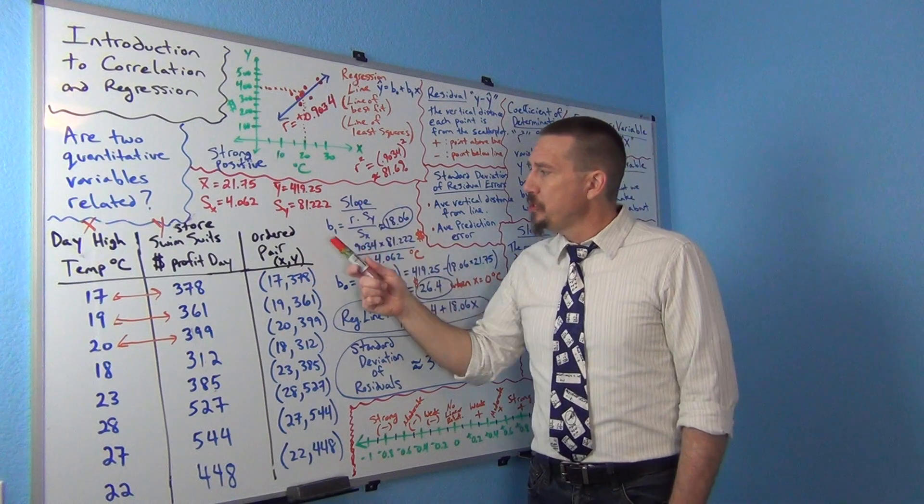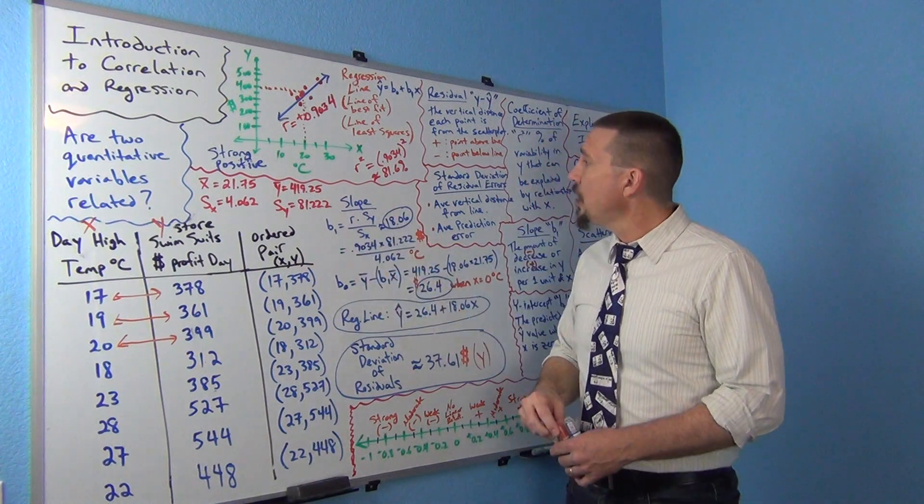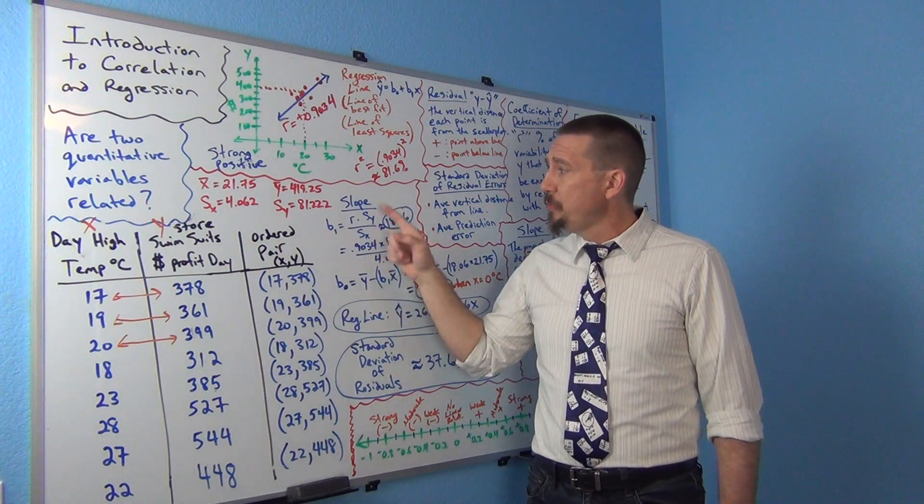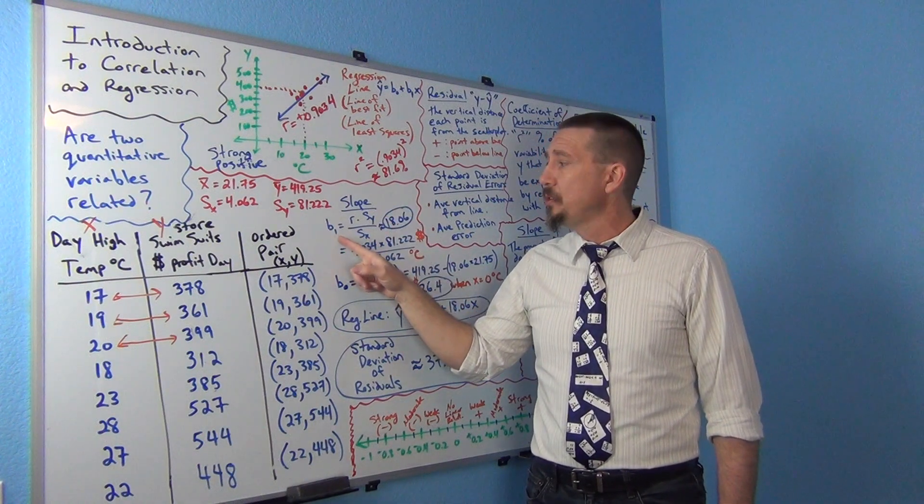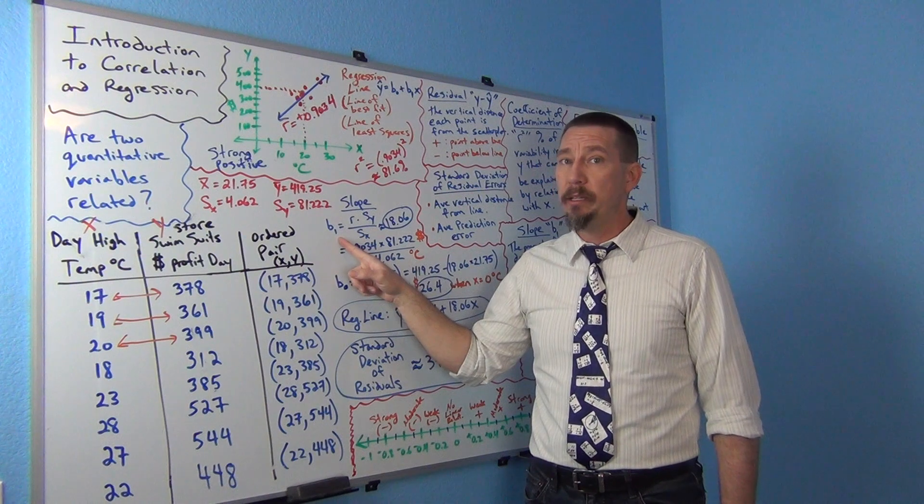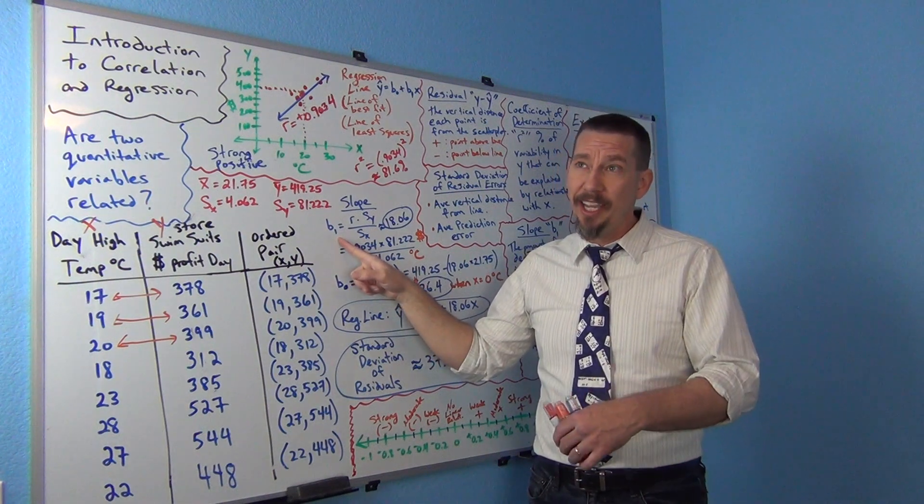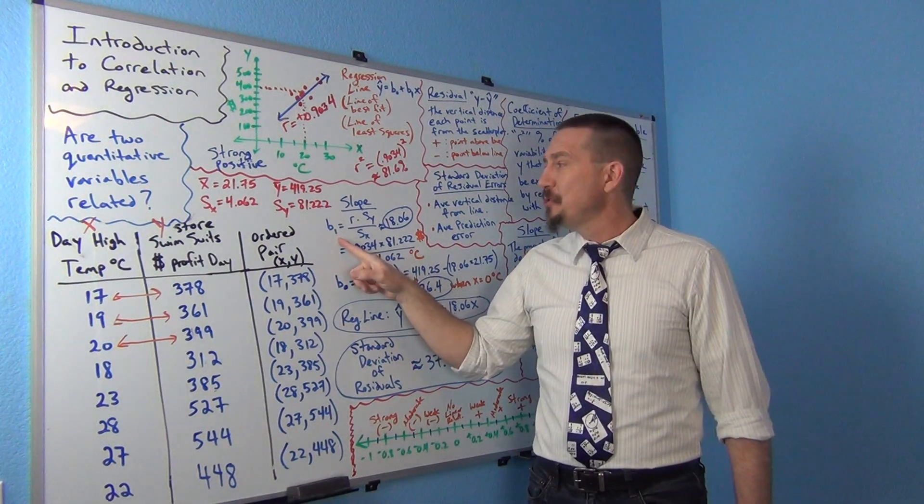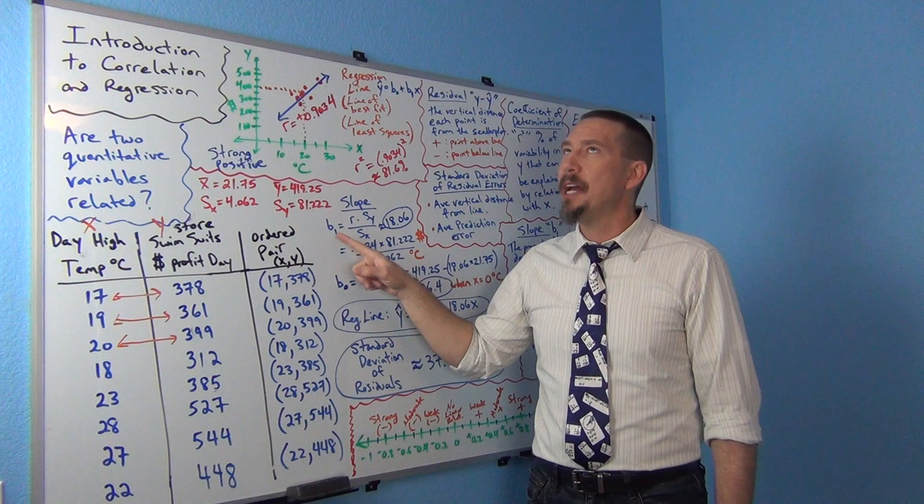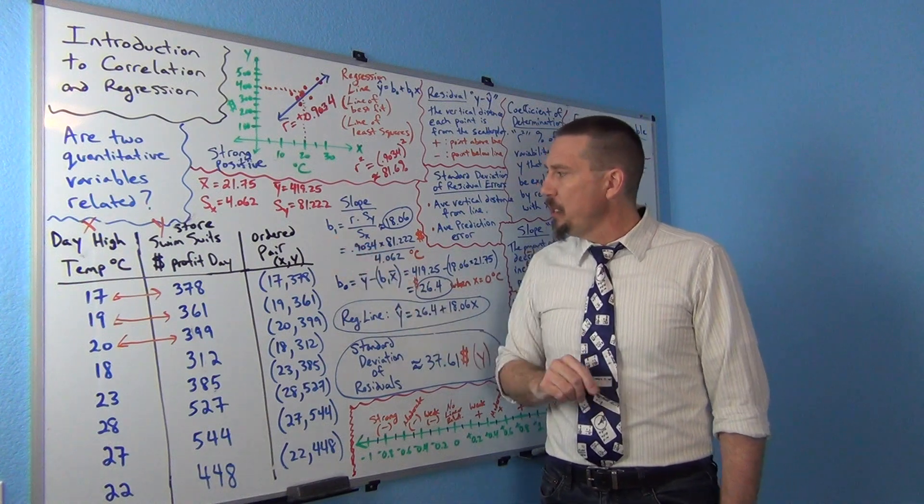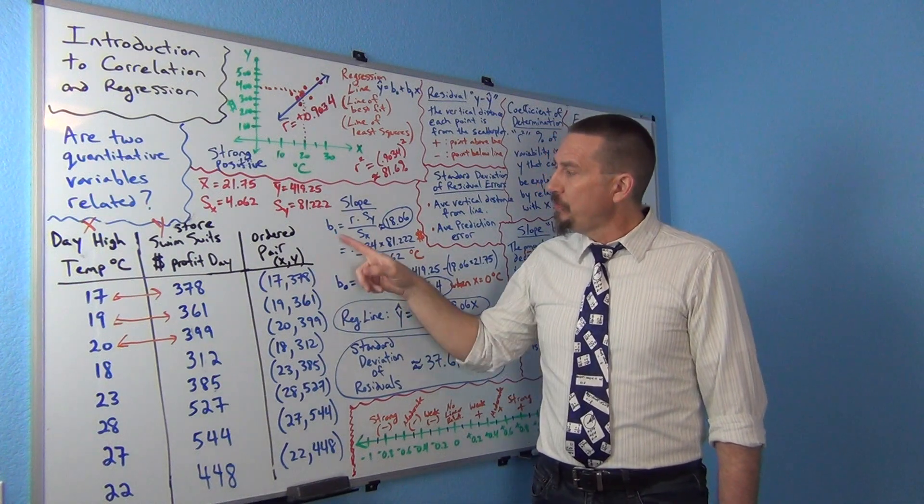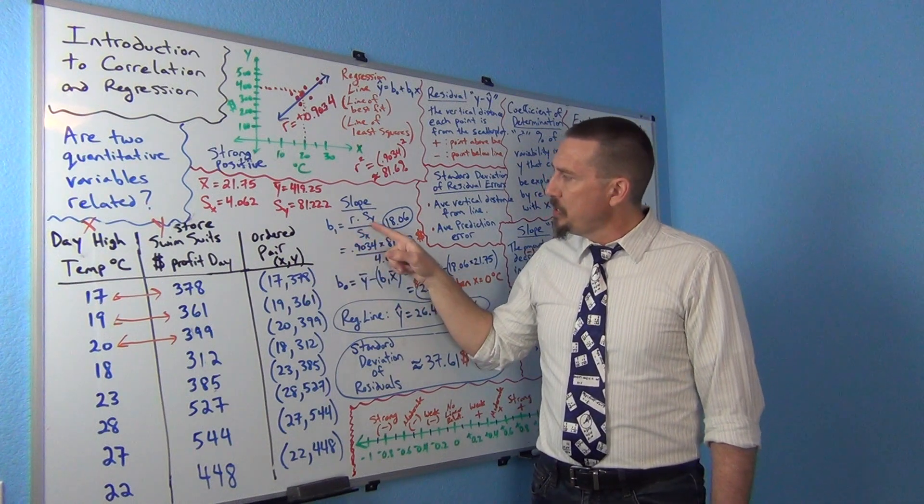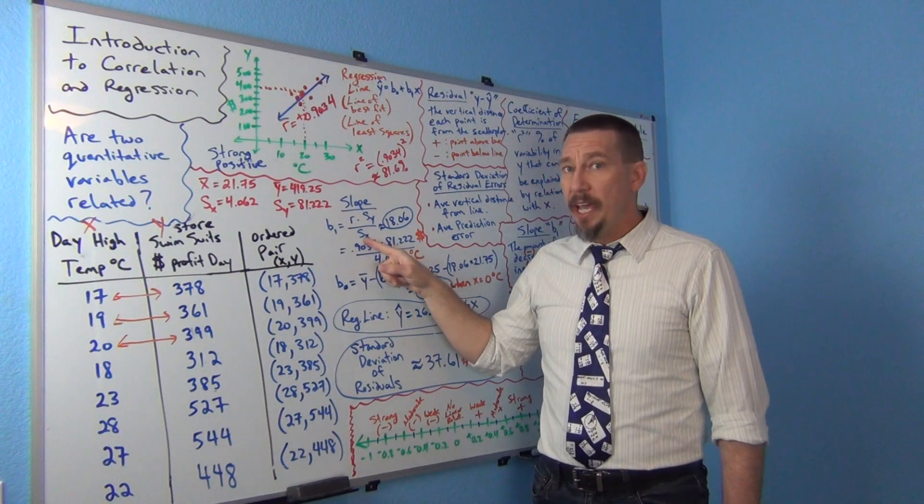So the formula for the slope. Now first of all, with slope, what letter do you use? Oftentimes in stat programs you'll see slope denoted as a b with a little subscript 1 next to it. I know a lot of you are used to y equals mx plus b, right? m was the slope in your algebra classes. But in stats, usually we denoted as b1. So b1 is slope.